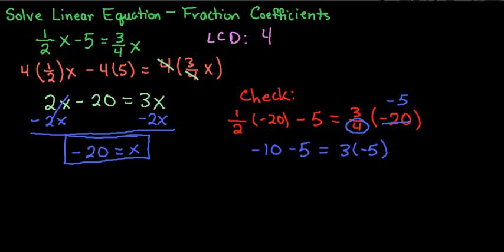And then we would just simplify both sides to make sure that they are equal to each other. So we end up with negative 15 on the left, and 3 times negative 5 also gives us negative 15, which works out. So negative 20 is indeed our solution.